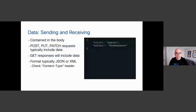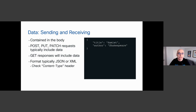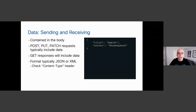Data — the body of the request. POST, PUT, and PATCH requests typically include data in a body or payload sent to the server for creating or updating information. GET responses also include data in the body, organized based on the Accept header you requested — a JSON body with information organized in JSON format. Formats are typically JSON or XML — check the Content-Type header for that.